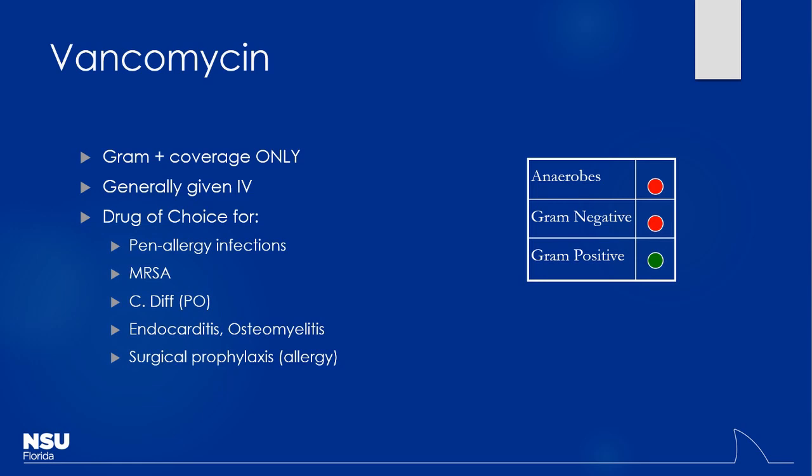Vancomycin is good for gram-positive coverage only. If you have Pseudomonas aeruginosa, you cannot use vancomycin — Pseudomonas is gram-negative. Vancomycin is only for gram-positives. There is really no anaerobic coverage, with one notable exception I'll mention in a second. No good gram-negative coverage — it's really only for gram-positives.